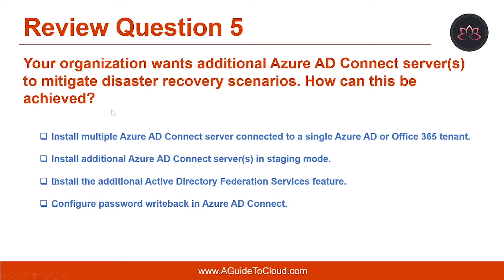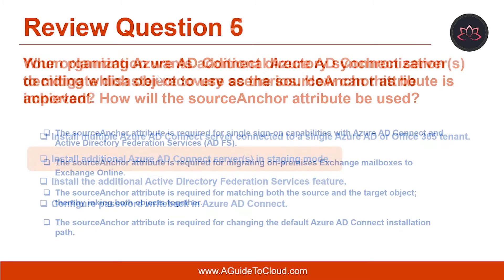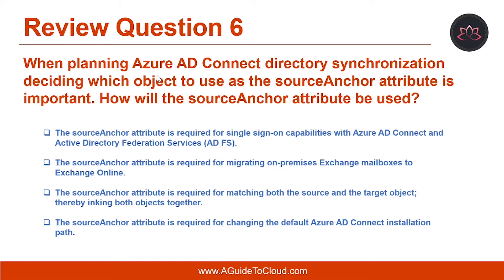Let's have a look at the fifth question. Your organization wants additional Azure AD Connect servers to mitigate disaster recovery scenarios. How can this be achieved? The correct answer is: install additional Azure AD Connect servers in staging mode.